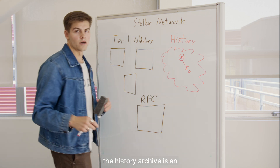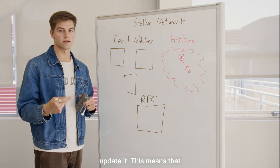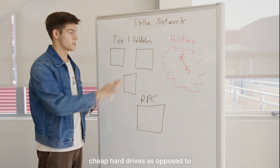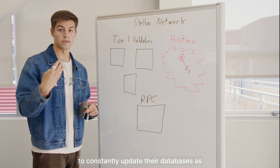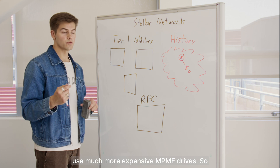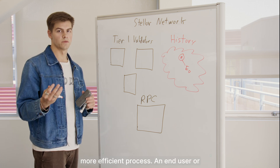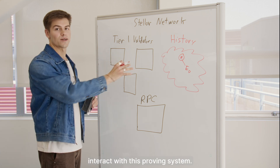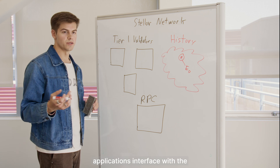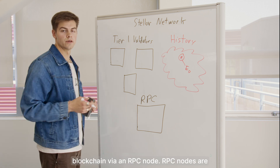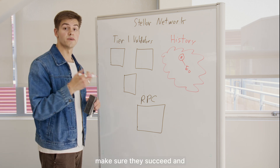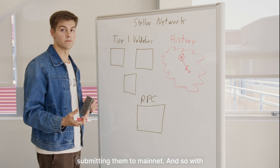Additionally, the history archive is an immutable data store, so you don't have to update it. This means that you can store these archived entries in the history on inexpensive cheap hard drives, as opposed to validators that need to constantly update their databases as they're executing transactions, meaning that they have to use much more expensive NVMe drives. So even though we're still storing information, it's a much more efficient process. How can an end user or application actually interact with this proving system? The answer is RPC. Most blockchain applications interface with the blockchain via an RPC node, which is used to query information about the state of the blockchain, as well as to simulate transactions to make sure they succeed and have the right fees set before submitting them to mainnet.